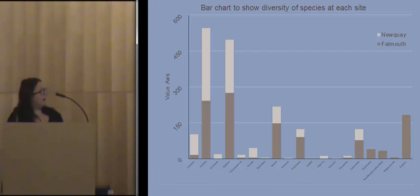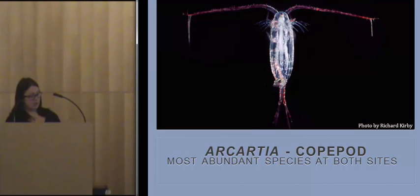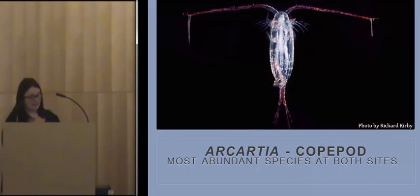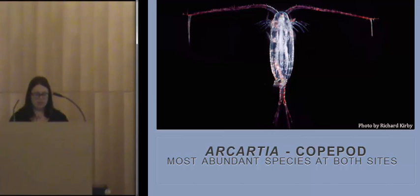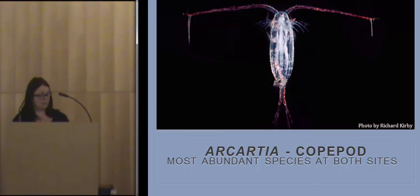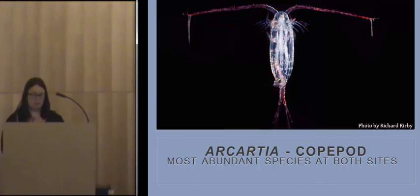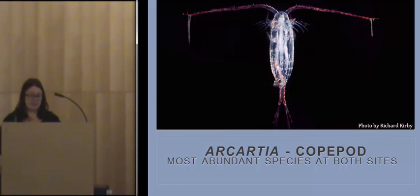The most abundant species present at both sites was Acartia, a genus of copepod in the order Calanoida. The reason for Acartia being the most abundant species could be because individuals within the Calanoida order are said to outnumber all other animal taxa within marine zooplankton, and may account for up to 70% of the total zooplankton biomass.